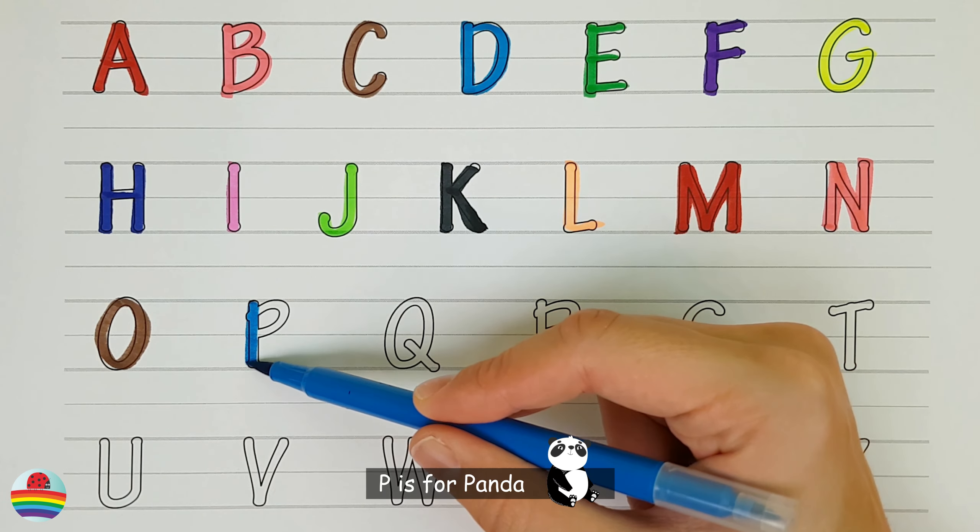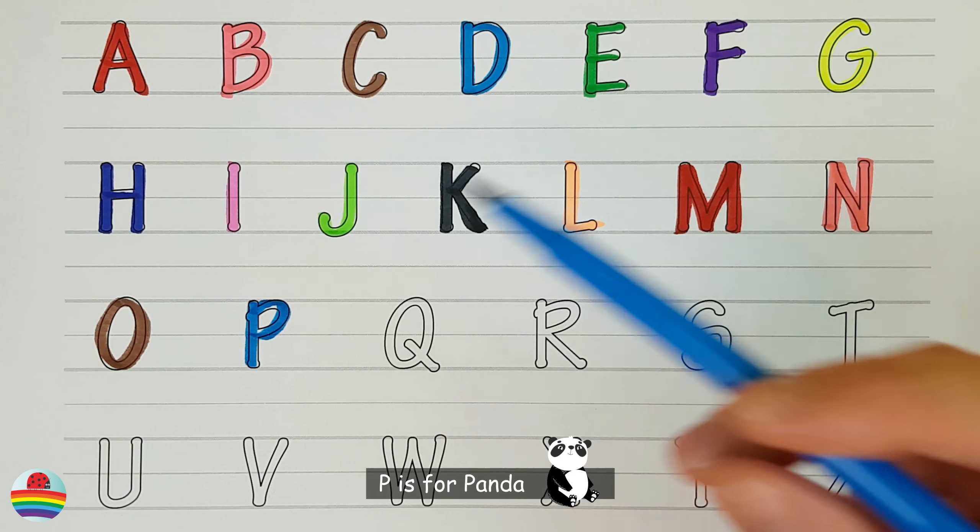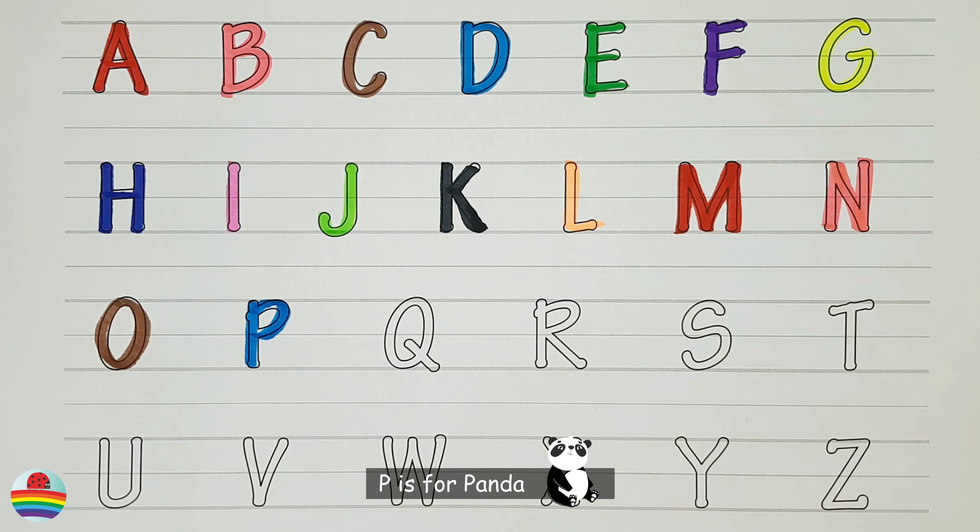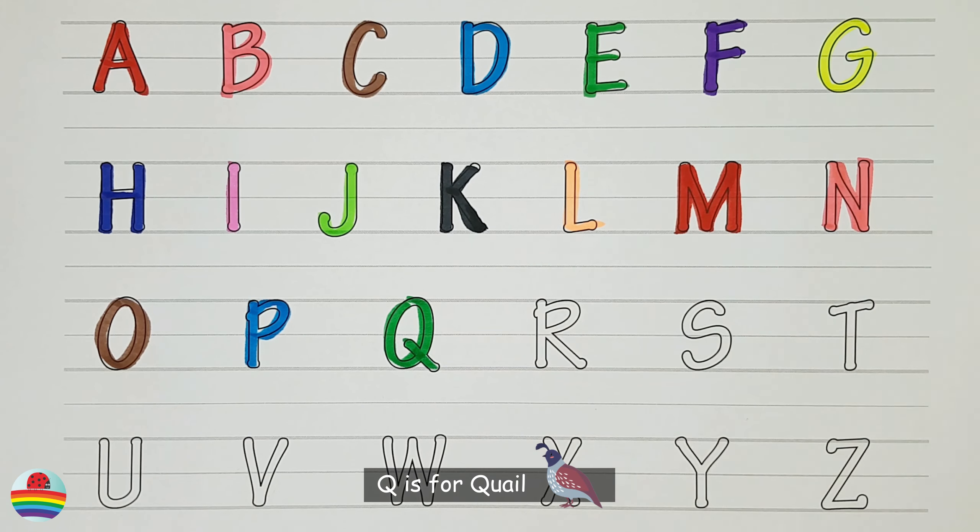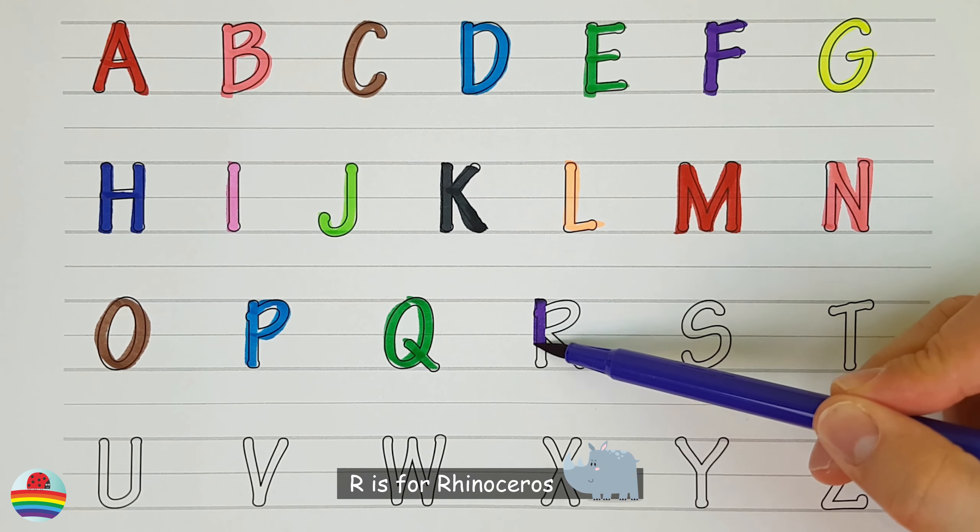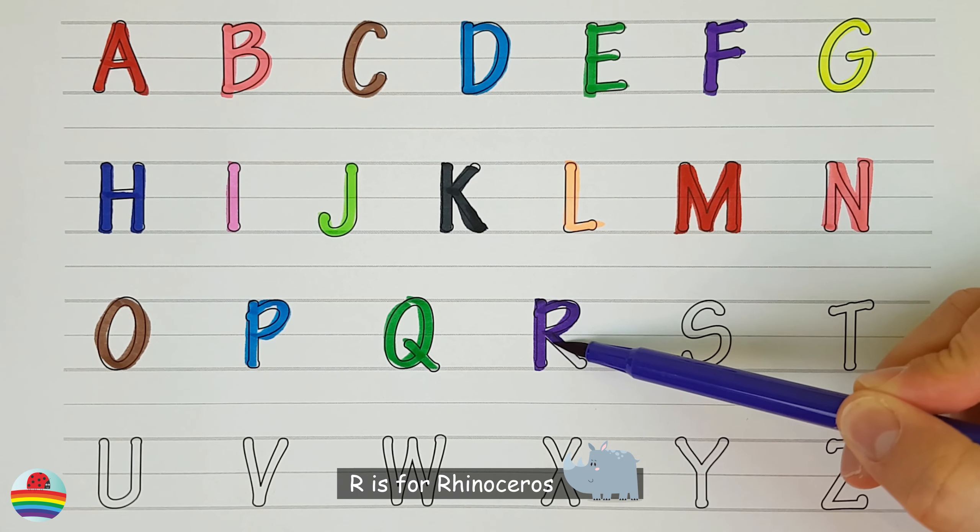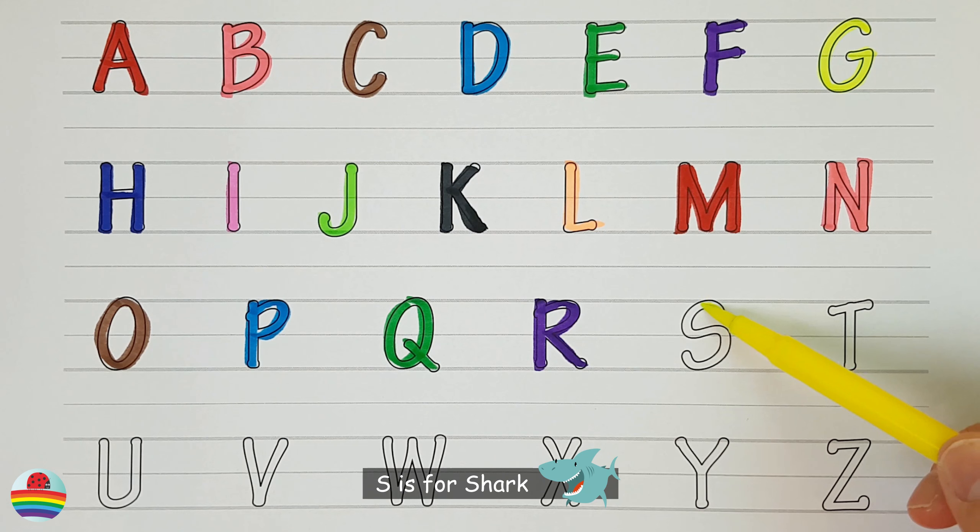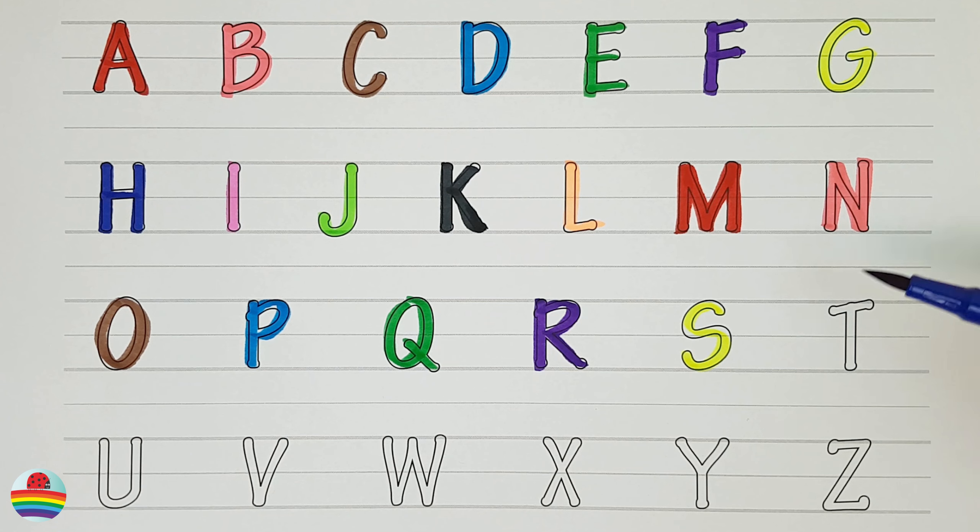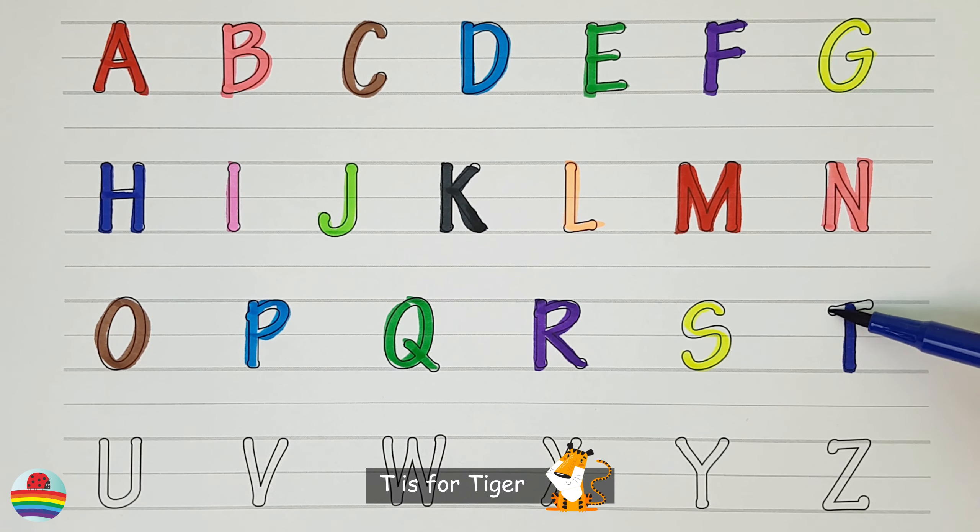P. P is for panda. P. Q. Q is for quail. Q. R. R is for rhinoceros. R. S. S is for shark. S. T. T is for tiger. T.